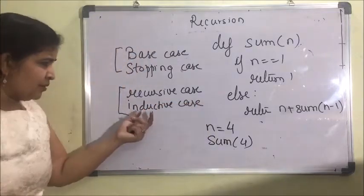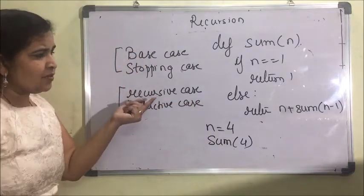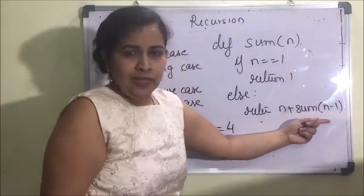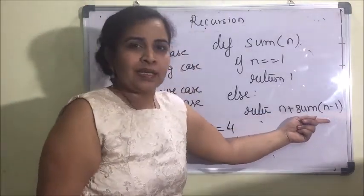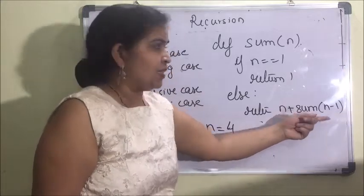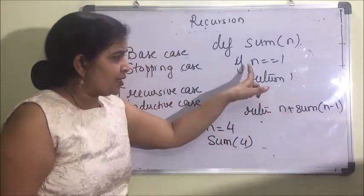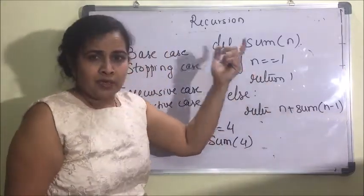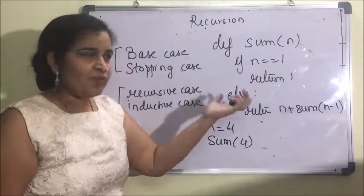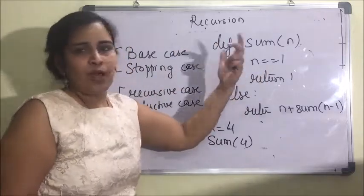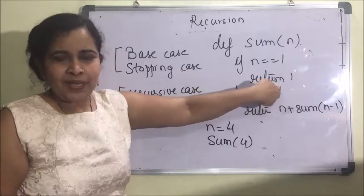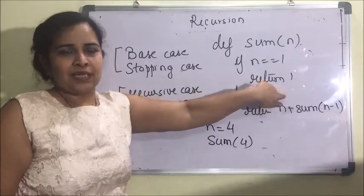The statement which calls the function recursively is known as the recursive case. The statement which sends the control out of the function is known as the stopping case or base case.